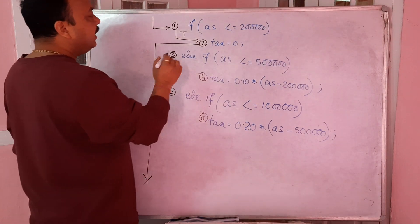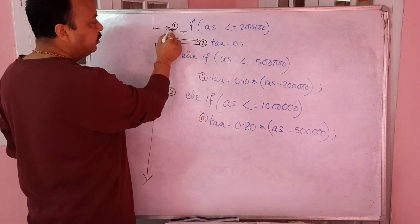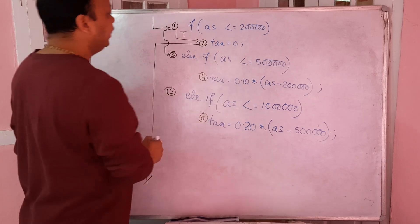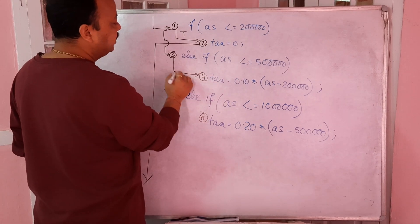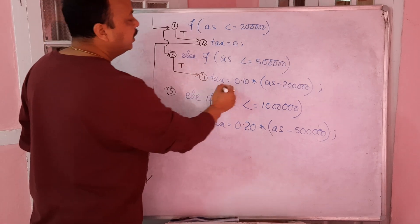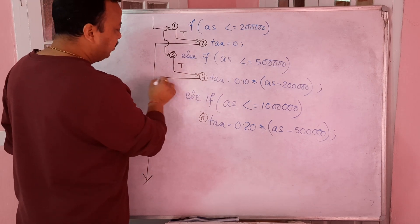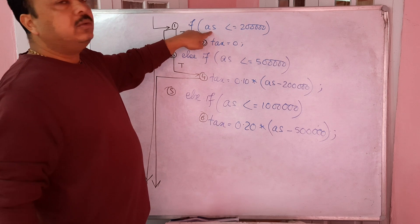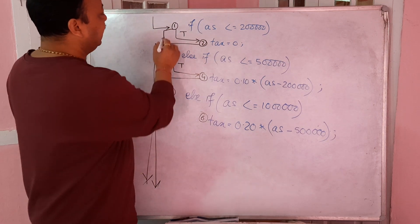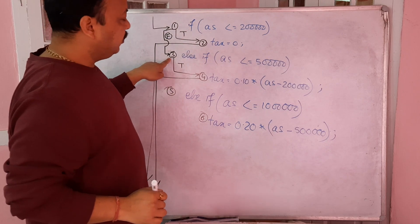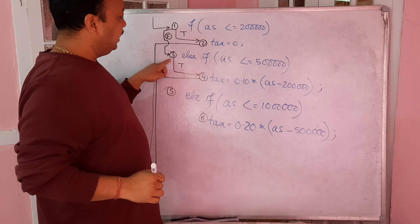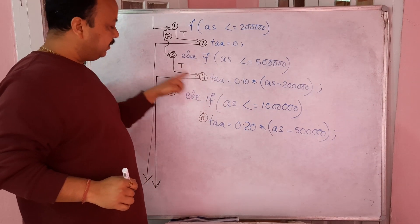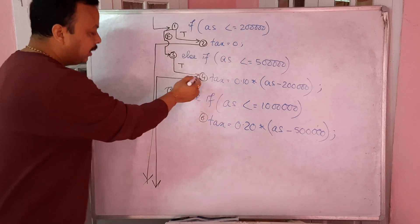If the first condition was not true, you move to the next condition and check whether your annual salary is less than or equal to five lakhs. If that is true, you calculate the tax percentage and then exit the block - you are not going to check the remaining conditions. Once you climb one step on the ladder and satisfy the condition, you come out of the entire structure.